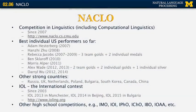NACLO is a competition in linguistics, but it covers also many computational linguistics problems. It has existed since 2007. Usually every year about 2,000 students in the United States and Canada participate, and the top eight of them go to the international level.